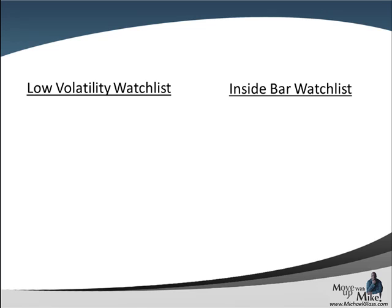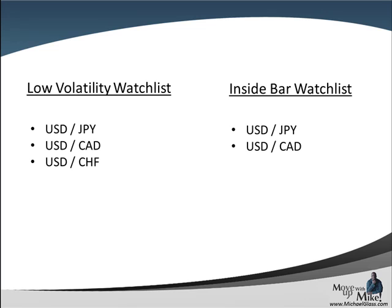We're going to move on to our watch list. As always, we start off with our low volatility watch list — this is our H1 one-hour time frame using Bollinger Bands. We take the time to mark the high and low of those upper and lower Bollinger Bands and watch for a breakout, preferably in the direction of the trend. Right now we have the Dollar-Yen, Dollar-Canadian, and Dollar-Franc. These are also candidates for our inside bar watch list — watching the daily price range, the high and low within yesterday's range, and looking for a break. All of our dollar currency pairs are showing up in our inside bar watch list, so we should be watching for a break.